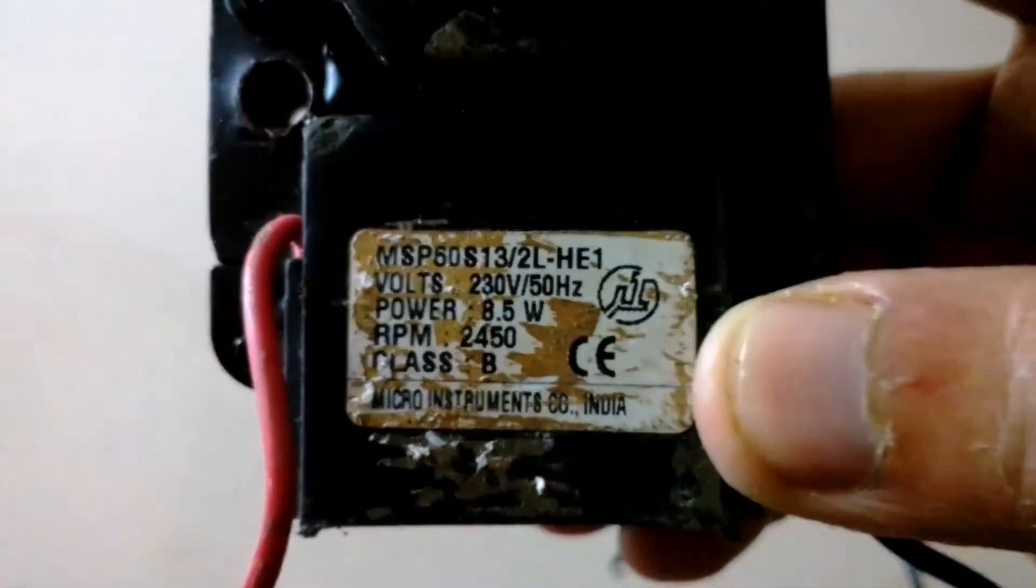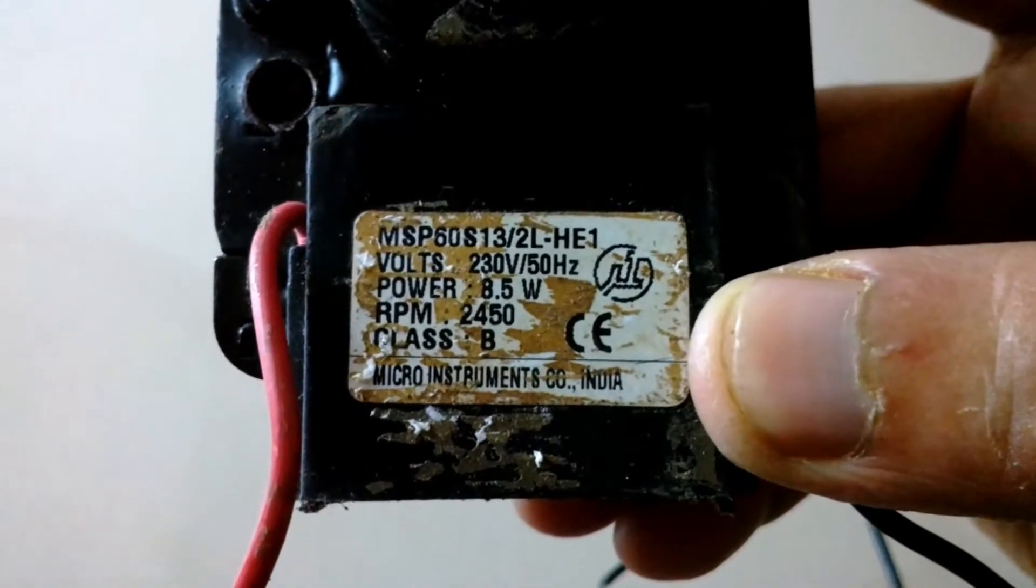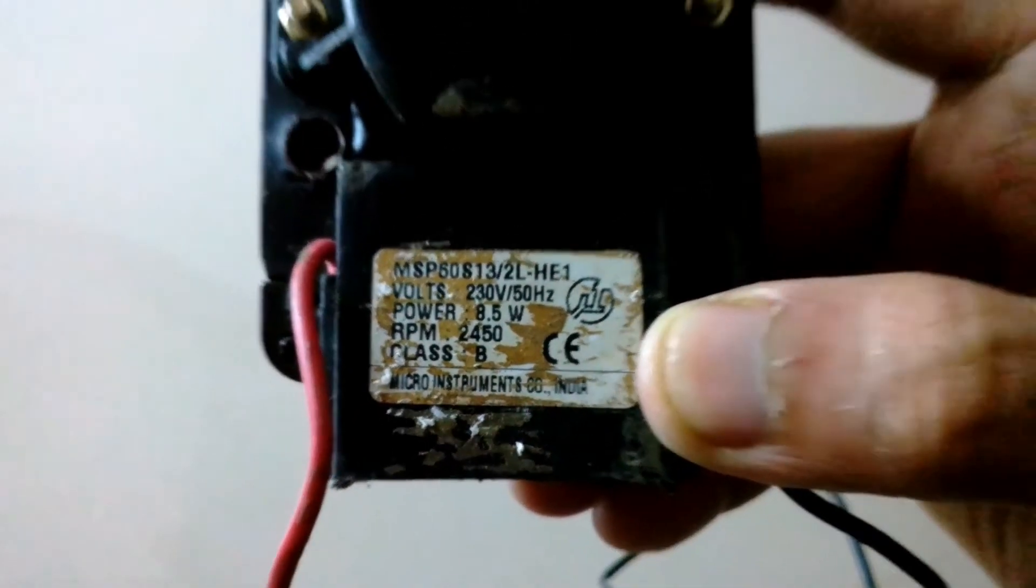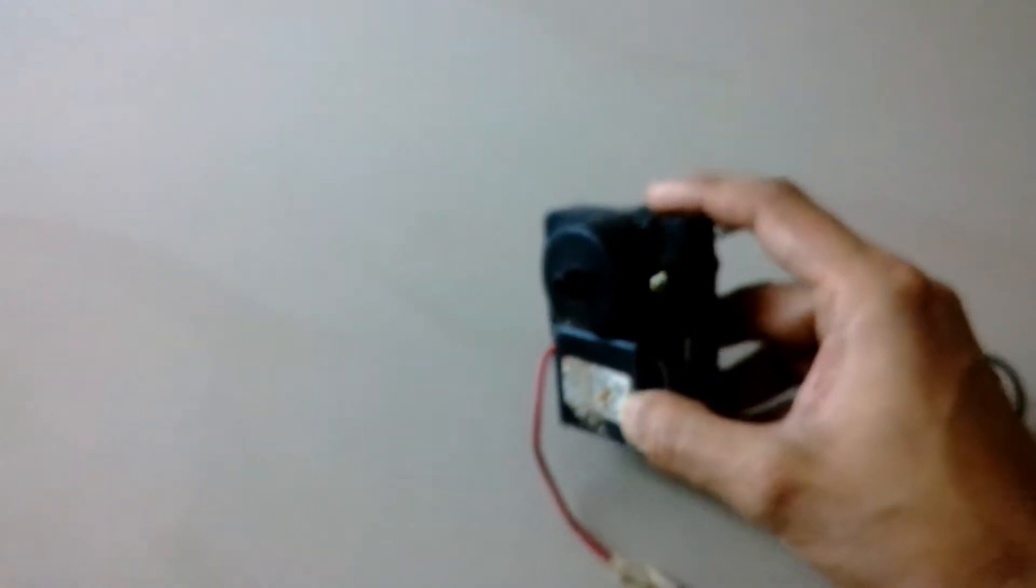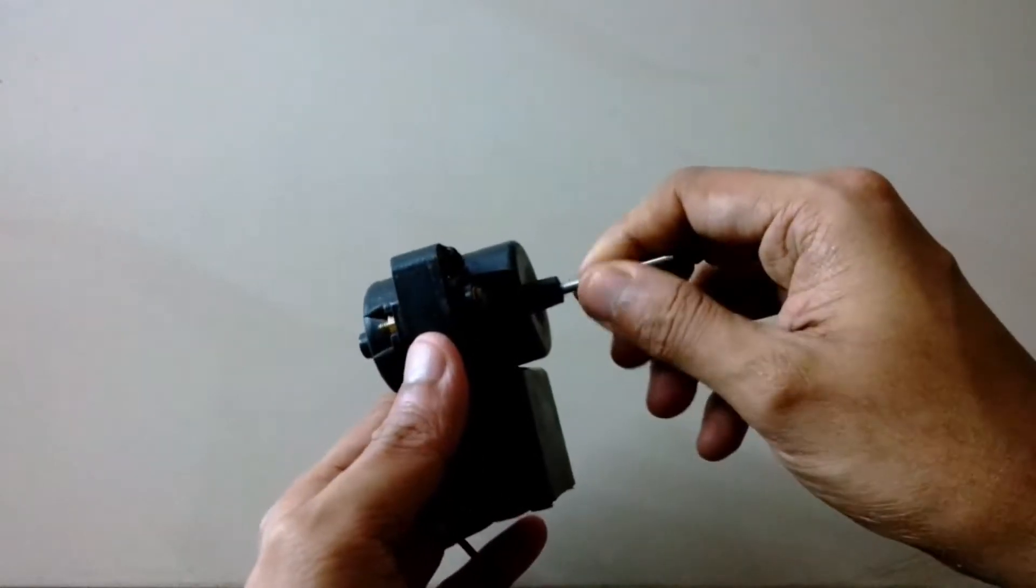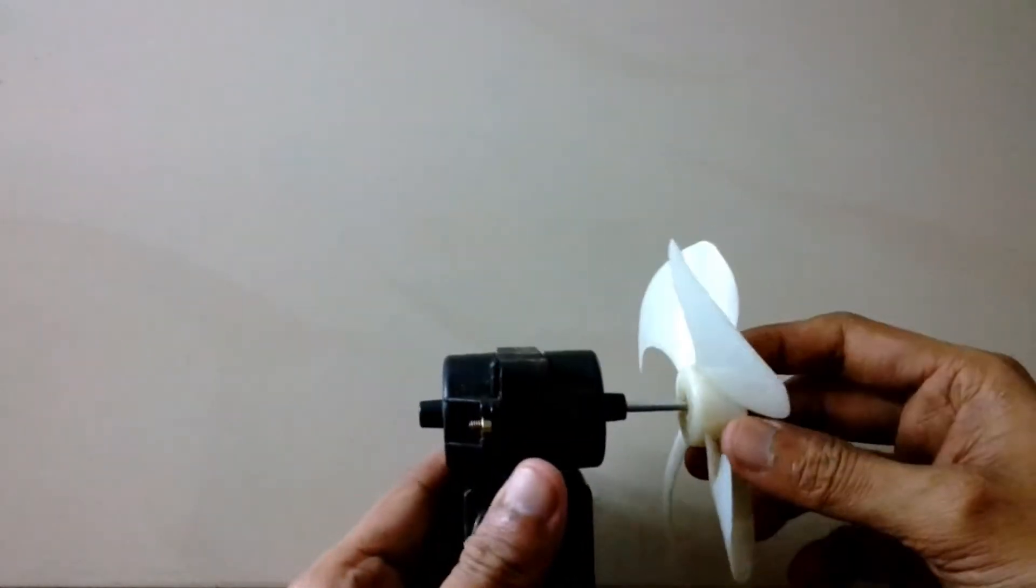As you can see, these are the specifications of this motor. I found this motor on a refrigerator for air circulation. It's used for the air circulation inside a refrigerator and it comes with this fan.